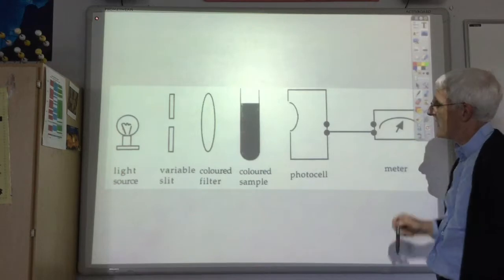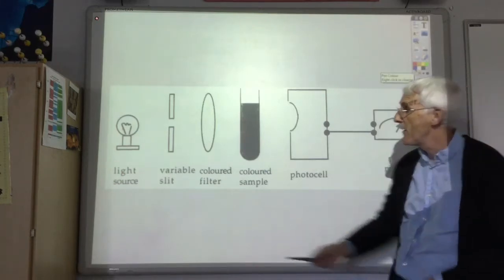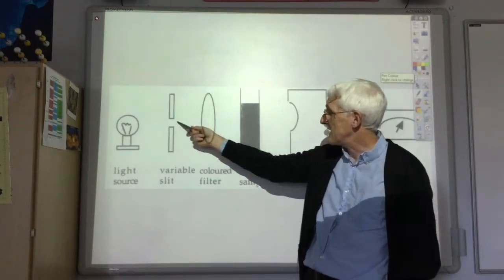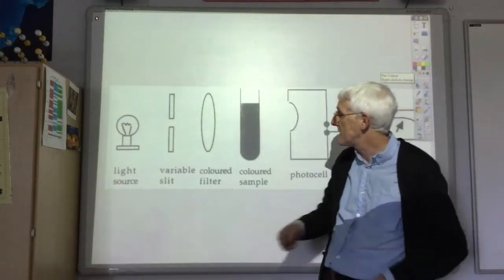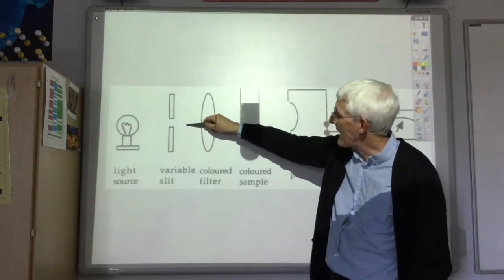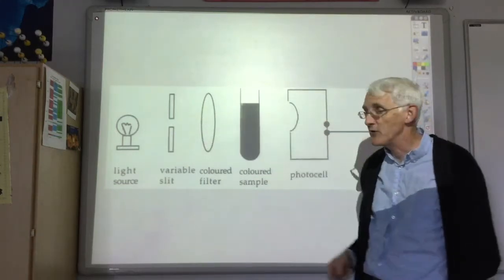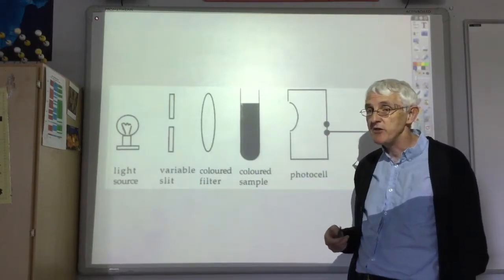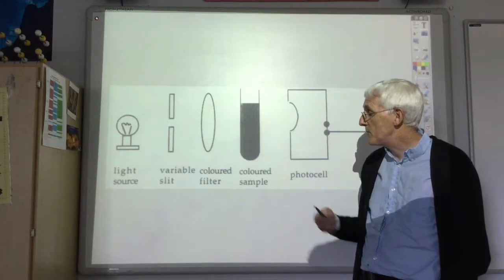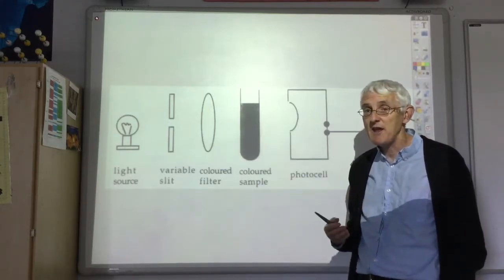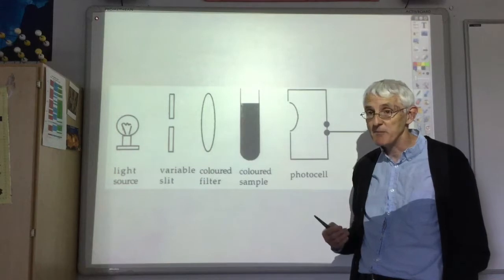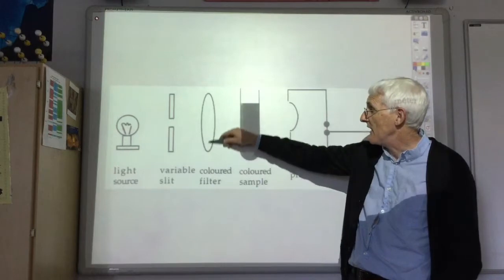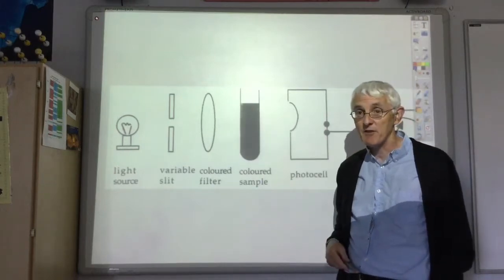So this is what our colorimeter is made up of. We've got a source of white light, and that passes through a slit to get a nice narrow beam of light. This beam of white light then is passed through a colored filter. Now you choose what filter to use, and what you usually do is you put in a filter that removes all the light that the sample does not absorb. So for the permanganate we probably want to put in a filter that lets through light of about 540 nanometers.